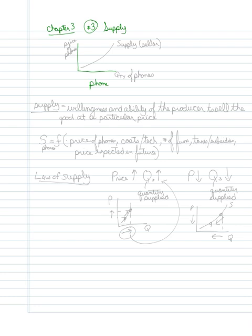So in the same phone market, we're still going to have the quantity of phones on our x-axis, the horizontal axis, and the price of phones on our y-axis, the vertical axis. And the supply curve will be almost always upward sloping.